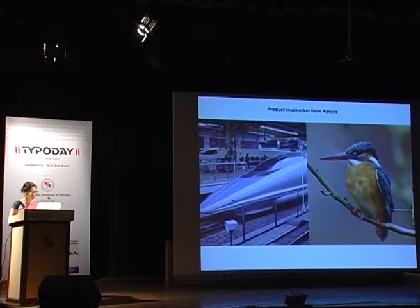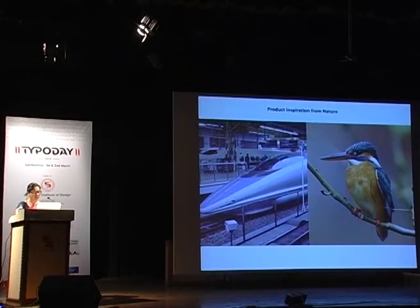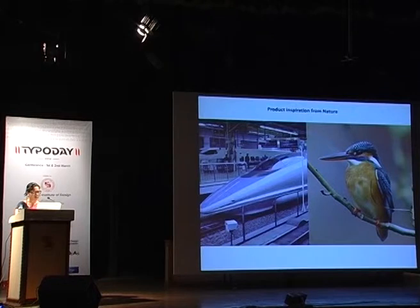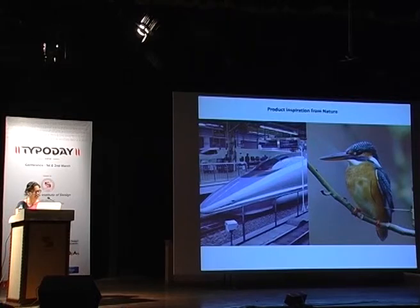The product — Shinkansen's bullet train — was inspired by the Kingfisher bird's beak. Engineers and designers tried to solve the loud noise problem when the train came out of a tunnel, because of the change in air pressure. They studied how the Kingfisher dives from air into water with little splashing. By redesigning the train front like a Kingfisher's beak, they succeeded in creating a quieter train, even achieving faster speed and using less energy. The form of this high-speed train became a tangible logo, identified and branded better than any written logo.